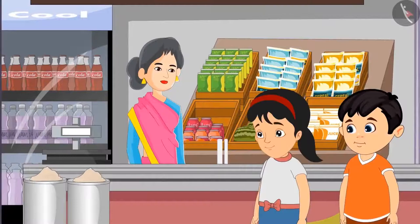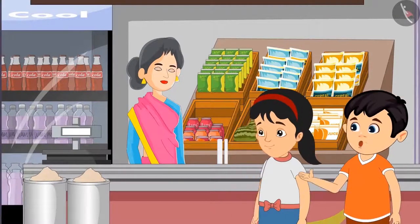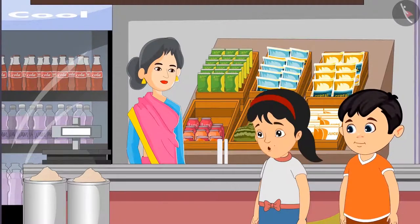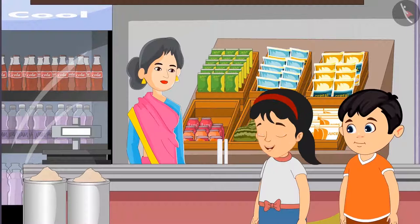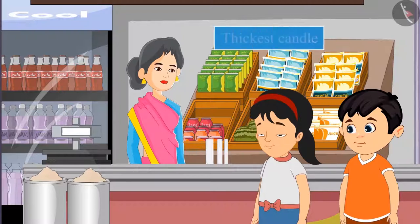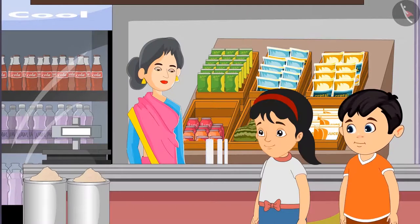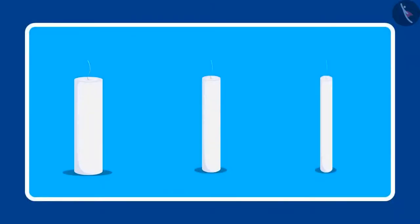Pinky, this candle is thick and this candle is thin. Chotu, will this thick candle burn all night? Pinky, let's take a candle thicker than this. Let's take a candle thicker than this. Aunty, please give us the thickest candle. Here you go, children. This is the thickest candle. Pinky, this candle is the thickest. Let us take this. Children, Pinky and Chotu took the thickest candle. Can you tell me which of the three candles is the thinnest candle? Yes, this is the thinnest candle. Was your answer the same, children?